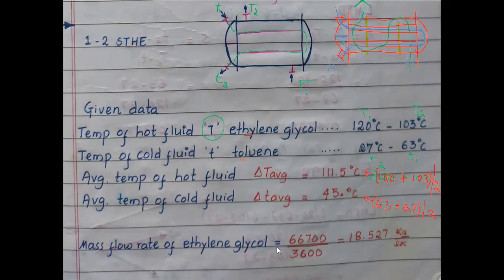Mass flow rate of ethylene glycol is given as 66,700 kg per hour. Convert to kg per second by dividing by 3600 (seconds per hour): 66,700 / 3600 = 18.527 kg/s.